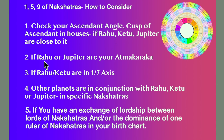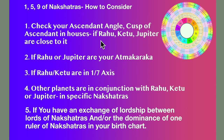Number 2: if Rahu or Jupiter are your Atma Karaka, which we'll speak about much later on. Number 3: if Rahu and Ketu are in the 1st and 7th axis — the first and the seventh axis.